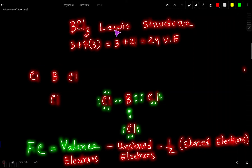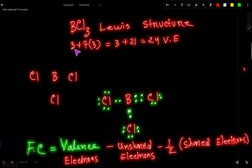We are finding the Lewis dot structure for BCl₃, boron trichloride. First we have to find out the valence electrons for this molecule. Boron is in group 3A, so it has 3 valence electrons. Chlorine is in group 7A, so it has 7 valence electrons, and we have 3 chlorine atoms, so we multiply by 3. That gives 3 plus 21, which is 24 valence electrons total.